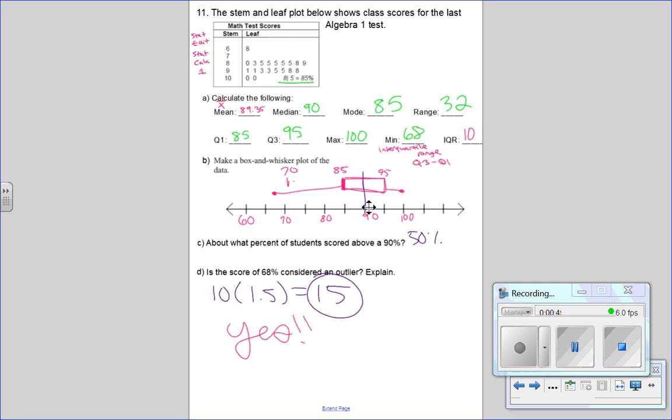So, yeah, 68 would be an outlier. It's more than 1.5 times away, 1.5 times the interquartile range, 15 units. It's more than 15 units away from the box.